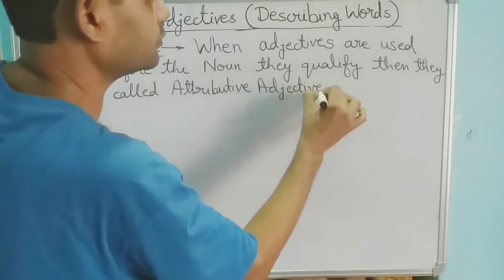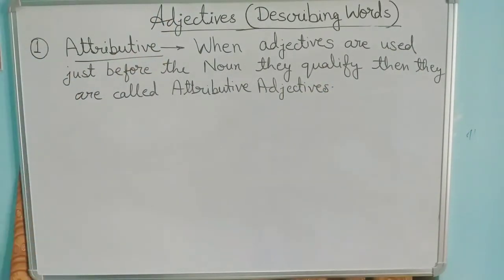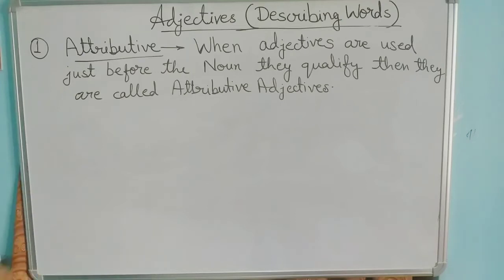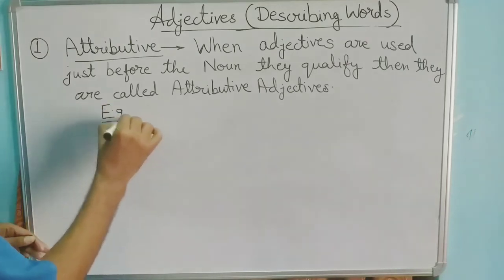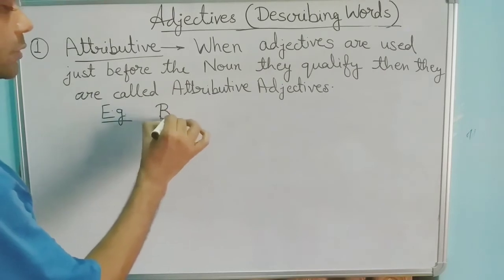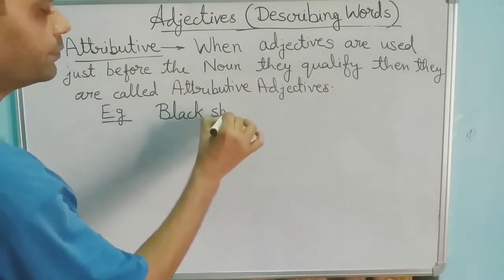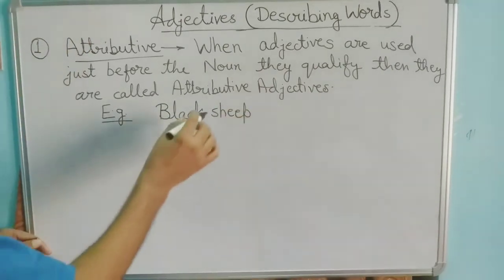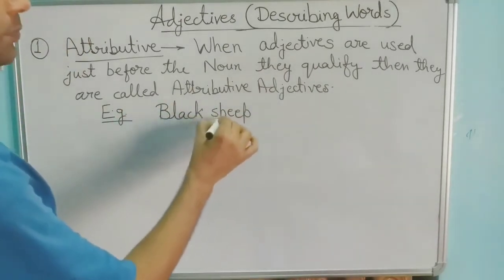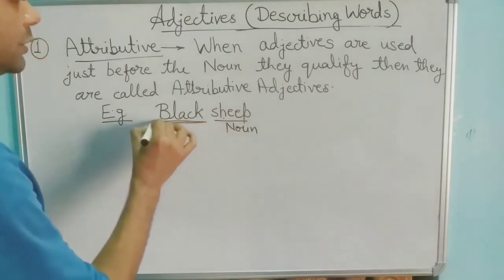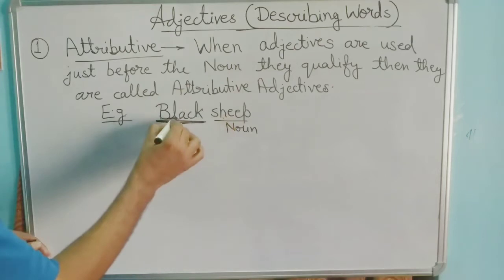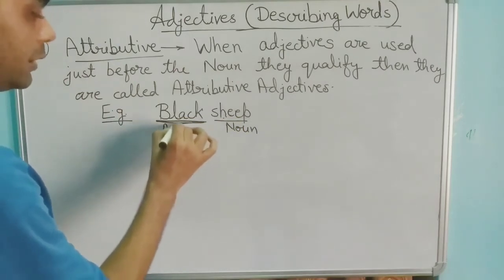When an adjective is used just before the noun it can qualify or describe — for example, 'black sheep.' Here we are talking about the sheep's colour. Sheep is our noun, and the word 'black' qualifies this noun, which is the colour of the sheep. So this is our Attributive adjective.